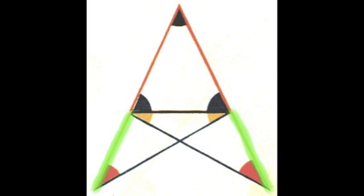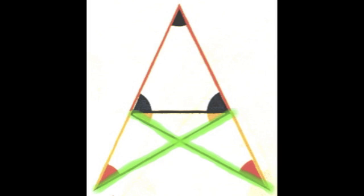Produce this line and this line by Postulate 2. Take these two lines to be equal to each other, and draw this line and this line.